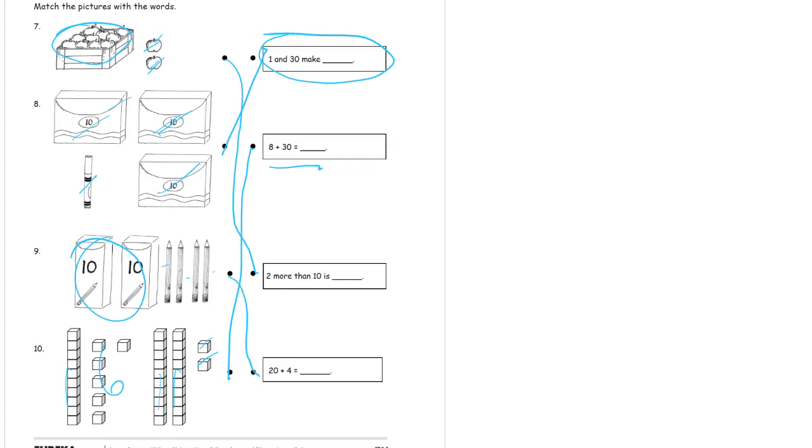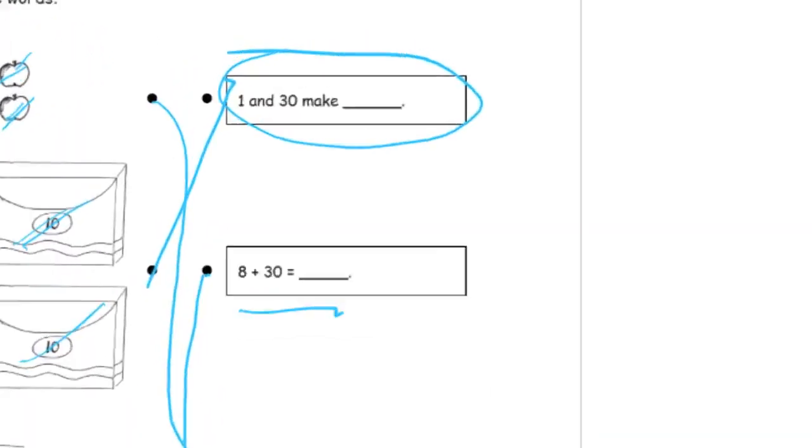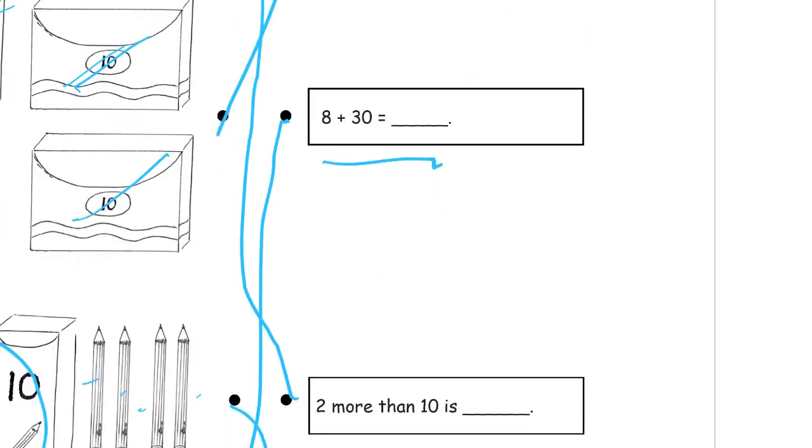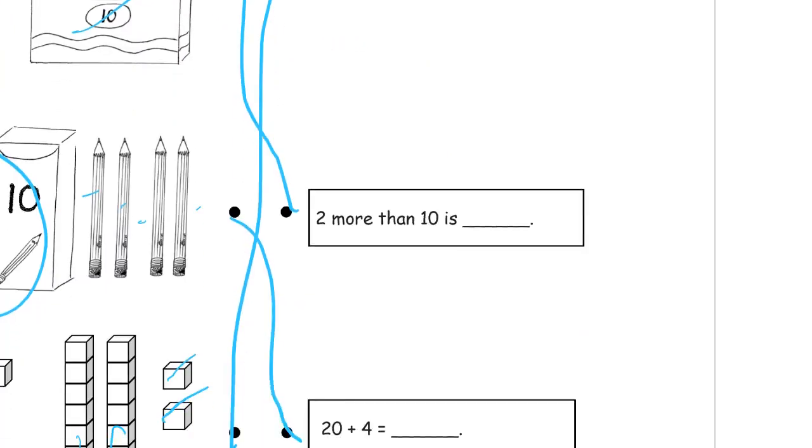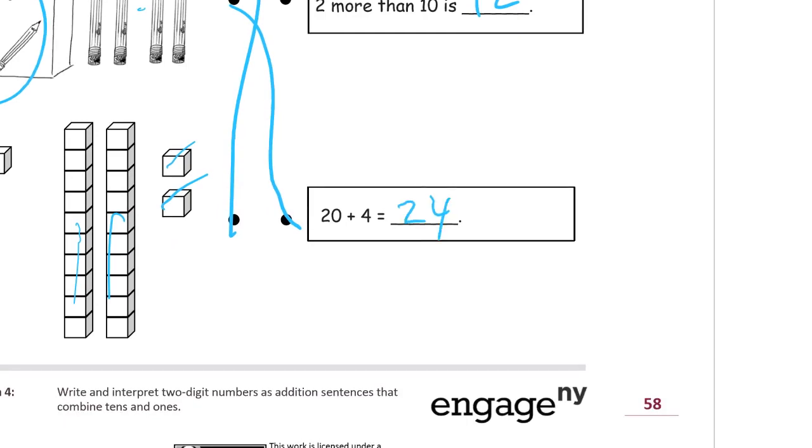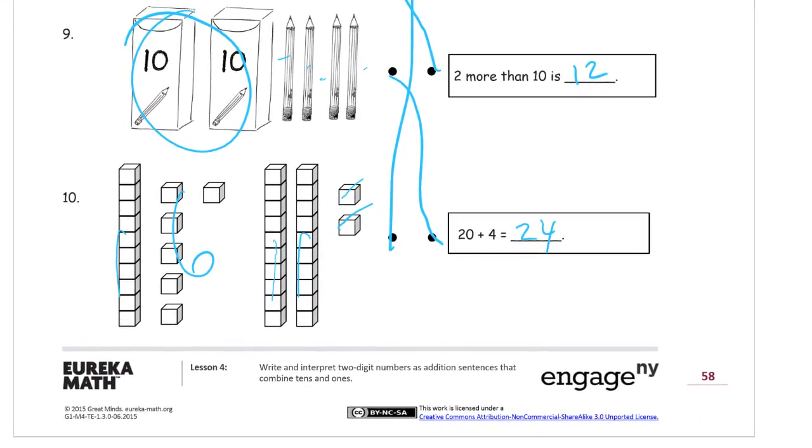We also have to write out, finish out, filling in the blanks. So, you can see this here. One and thirty make thirty-one. And eight plus thirty is thirty-eight. Two more than ten is twelve. Say that out loud, please. And twenty plus four equals twenty-four.